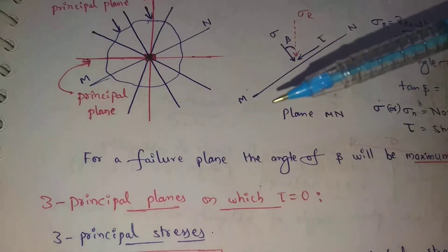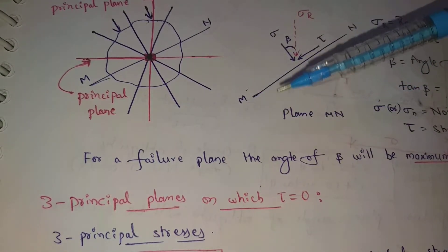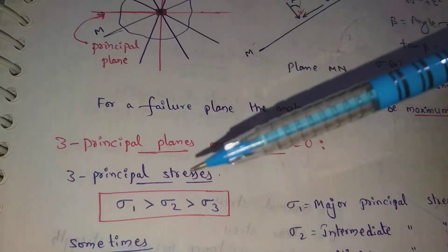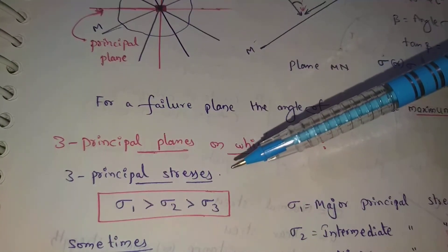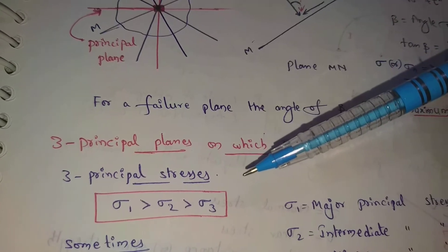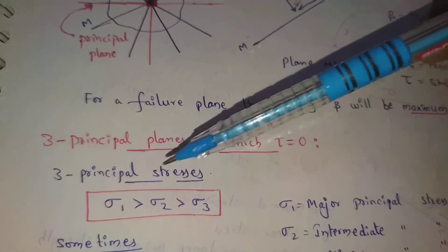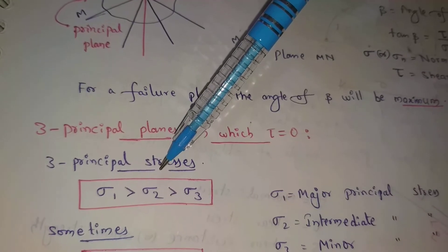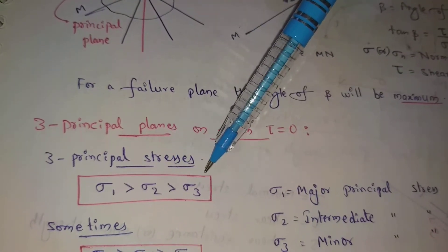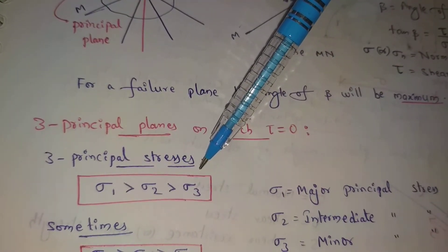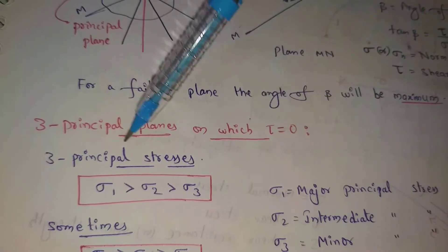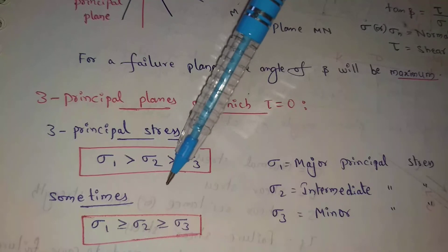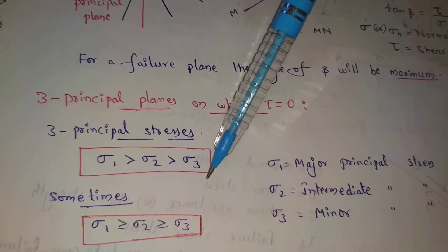There are three principal planes on which Tau equals zero. The principal stresses are ordered: sigma 1 greater than sigma 2 greater than sigma 3. Sigma 1 is the major principal stress, sigma 2 is the intermediate principal stress, and sigma 3 is the minor principal stress. Sometimes sigma 1 is greater than or equal to sigma 3.